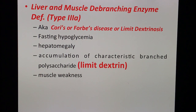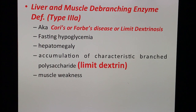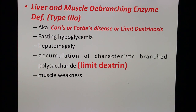Since this is mentioned in Harper's: a deficiency of the debranching enzyme is type 3A, also known as Cori's disease, Forbes' disease, or limit dextrinosis. A patient with Cori's or Forbes' disease usually presents with fasting hypoglycemia, hepatomegaly, and an accumulation of a characteristic branched polysaccharide known as limit dextrin. Since this involves muscle glycogen, the patient also presents with muscle weakness.